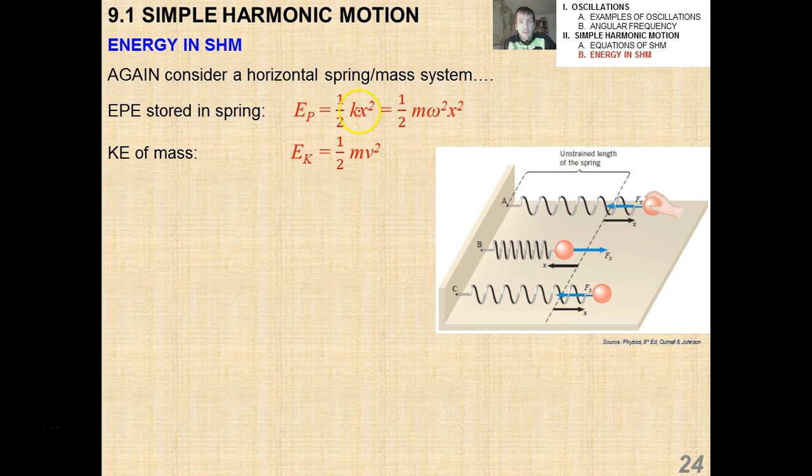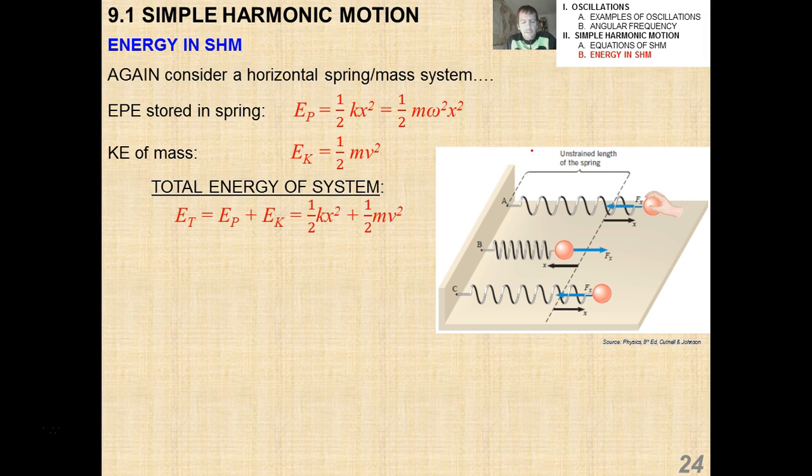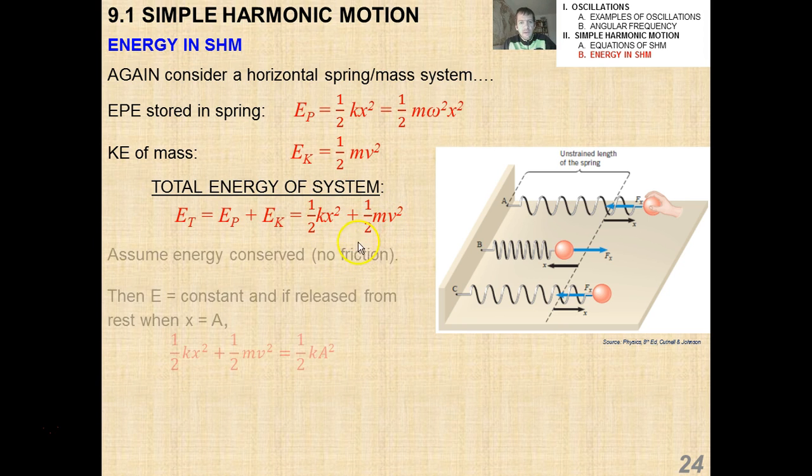Now, because k is m times omega squared, as we talked about before, we can also express that as one-half m omega squared x squared, where omega is 2 pi over the period. So therefore, the total energy of the system, if you remember back when we studied gravitational potential energy and kinetic energy, we said the total energy of a falling object was the sum of those two. Similarly, in this case, we're going to call the total energy E sub t as the kinetic energy plus the elastic potential energy. Now look how similar these equations appear.